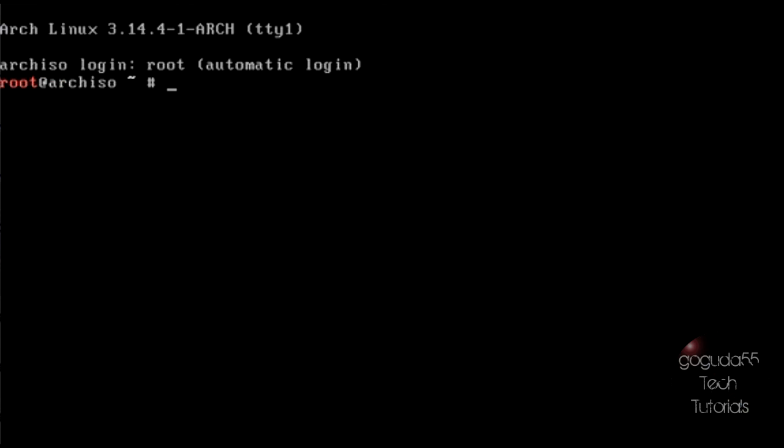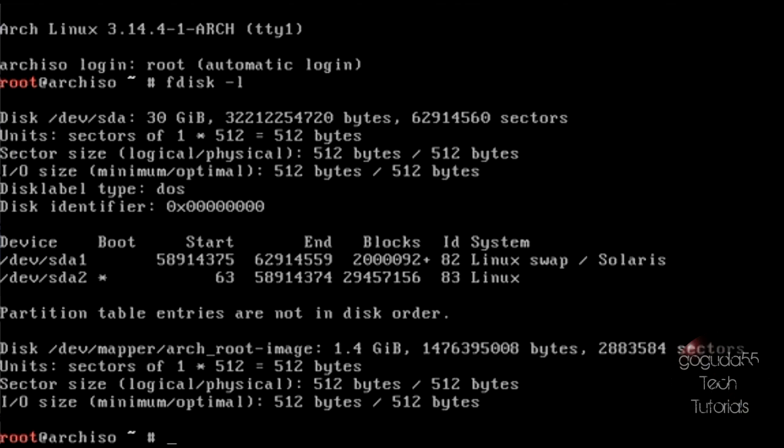So the very first thing that we're going to do is we are going to be partitioning the hard drive. In order to see what the name of your disk drive is you're going to want to run fdisk -l. This is using the -l flag on the fdisk command to see the list of the disks in the system. You can see here that it has detected two disks: one that is 30 gigs and one that is 1.4 gigs. The 1.4 gig one is actually the Arch Linux image that we are running, so I'm going to be installing it to the 30 gig drive.